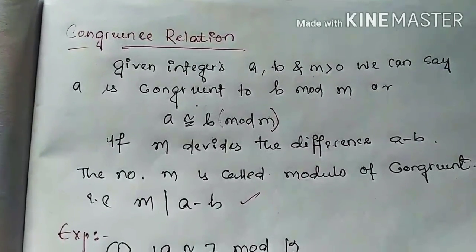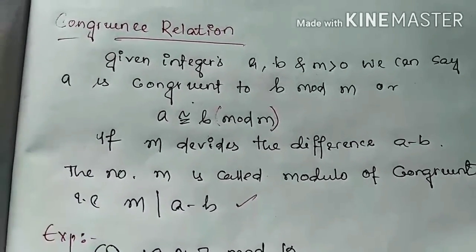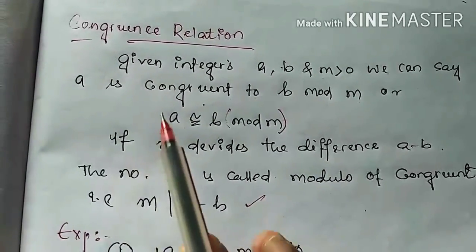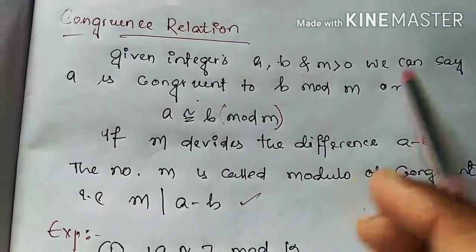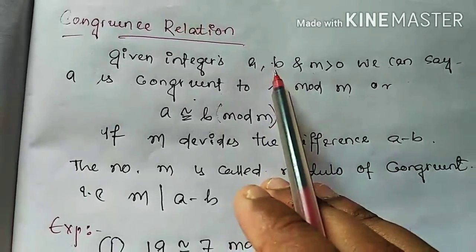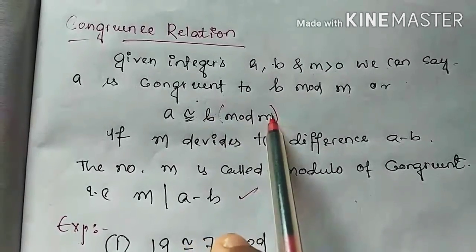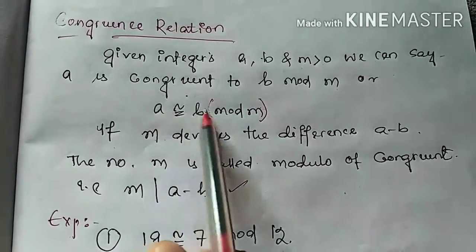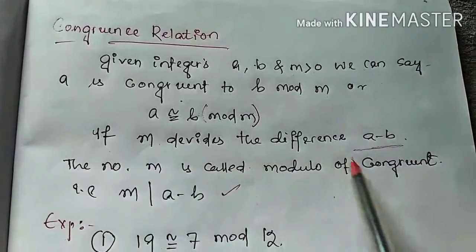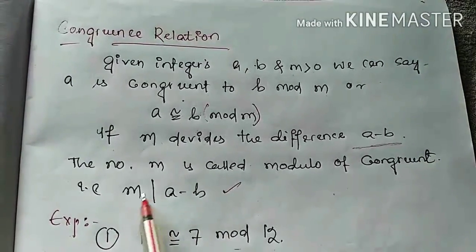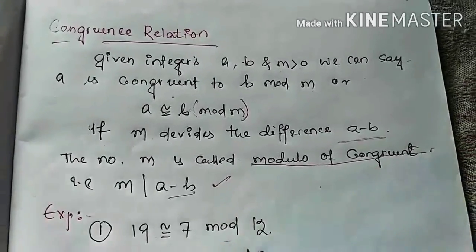In this video we are going to learn about the congruence relation. Starting from the definition: for given integers a, b and m greater than zero, we say that a is congruent to b modulo m if m divides the difference a minus b. This m is called the modulo of congruence.